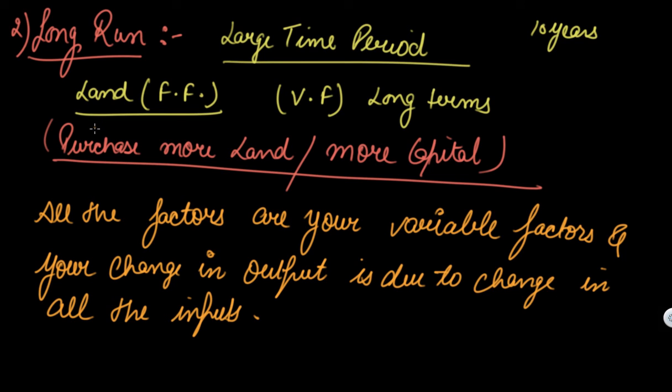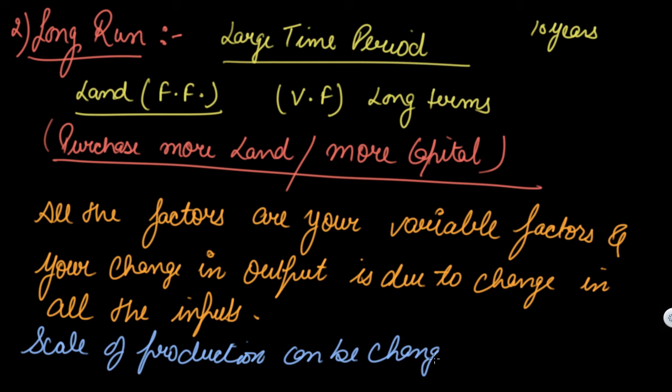So in your long run there is no factor that is fixed. In the long run you can change or mold any of your factors. All the factors become your variable factors and the scale of production can be changed. So in the long run you can expand your business from 50 shirts to let's say 50,000 shirts.